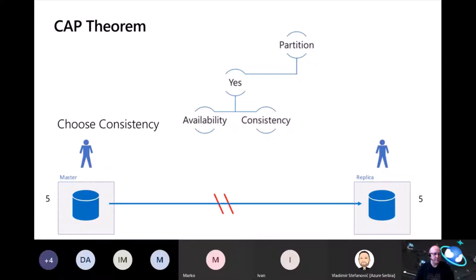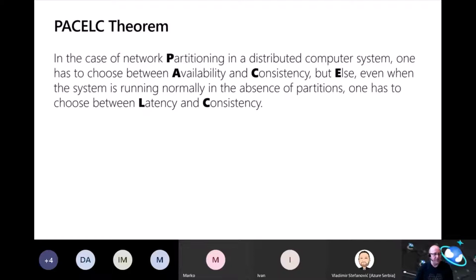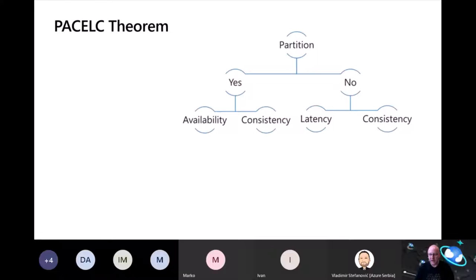CAP theorem does a good job describing the choice customers need to make when the network is cut, but it doesn't provide the full picture when designing distributed systems because there's actually a third trade-off: latency. This picture was completed in 2010 with the introduction of PACLC theorem. What this reads is: in the case of a network partition, one has to choose between availability and consistency — that's the CAP part. But even when the system is running normally in the absence of partitions, one still has to choose between latency and consistency.